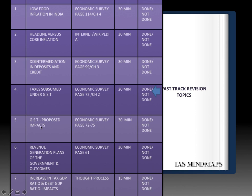Fifth, GST proposed impacts — please go through the impacts as given in the Economic Survey, pages 72 to 75. Sixth, revenue generation plans of the government and the outcomes of the last one year, given on Economic Survey page 61 — very crucial for statement-based questions. Seventh, increase in tax-to-GDP ratio and increase in debt-to-GDP ratio — this is a thought-process-based question about the impacts these rising ratios will have upon the Indian economy. Please go through all these topics as they are crucial.